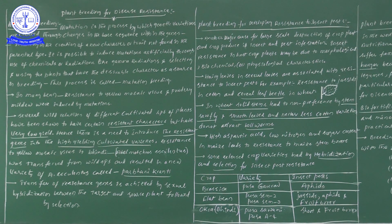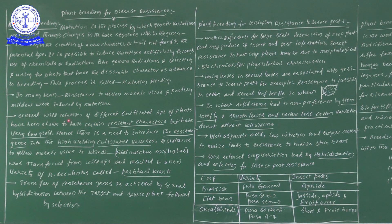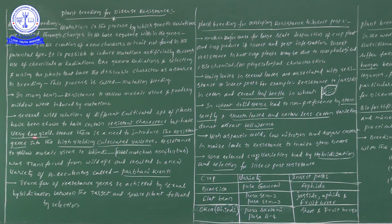Let us continue under mutational breeding. Several wild relatives of different cultivated species of plants have been shown to have certain resistant characters but very low yield. These wild varieties have resistant characters but very low yield. Therefore, there is a need to introduce the resistant genes from wild varieties into high-yielding cultivated varieties.